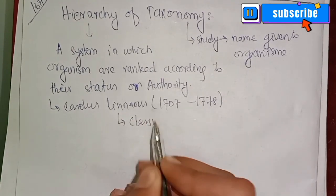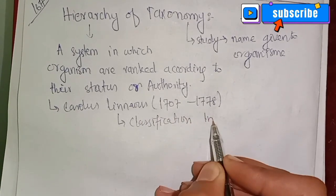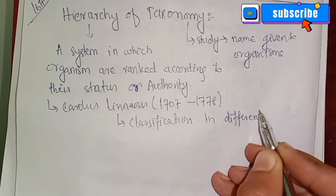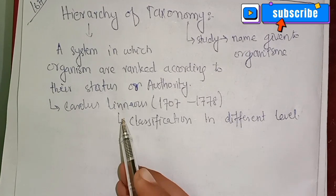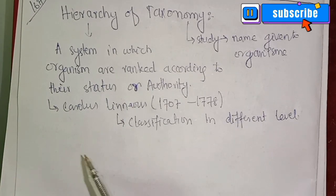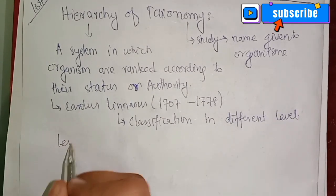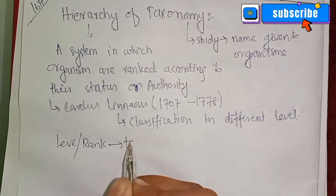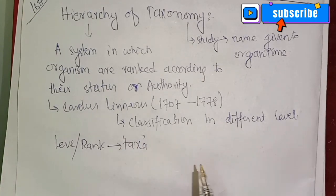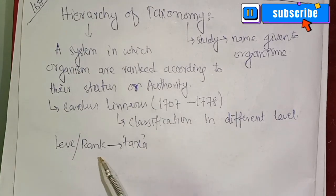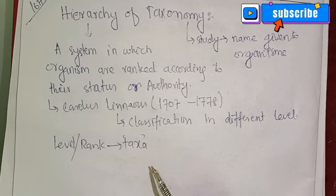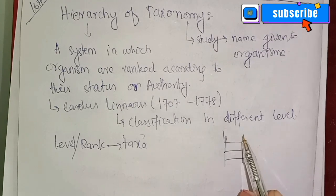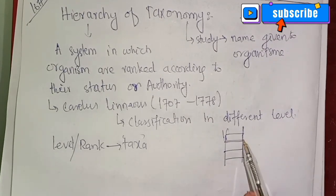Classification of organisms involves different ranks and different levels. Each rank or level is called a taxon — singular taxon, plural taxa. Taxa are arranged in order from larger to smaller groupings, representing the hierarchy of classification.